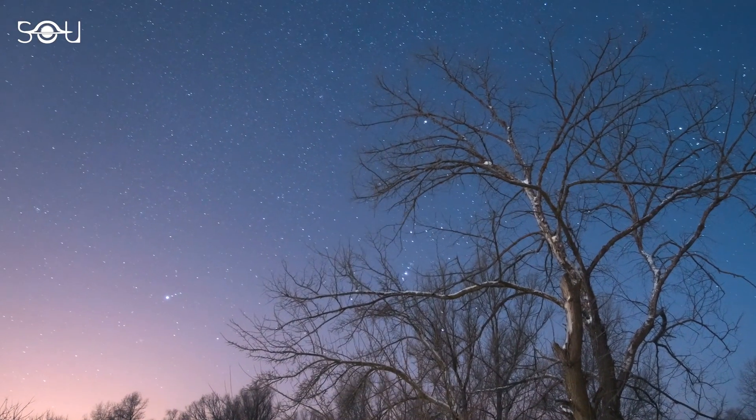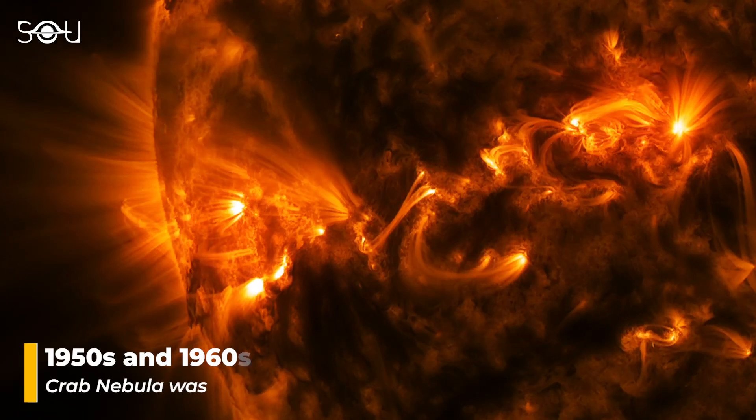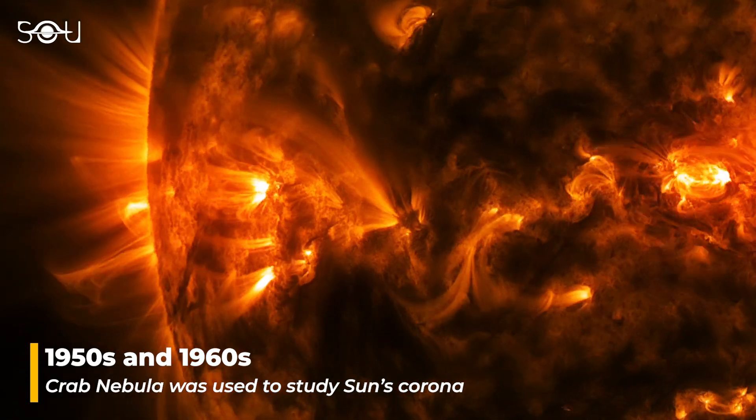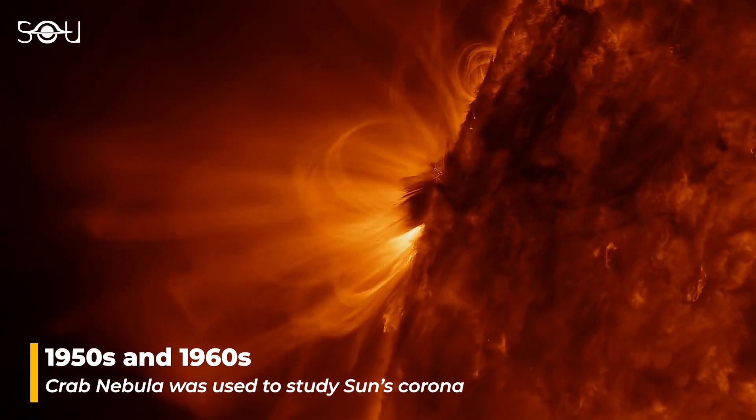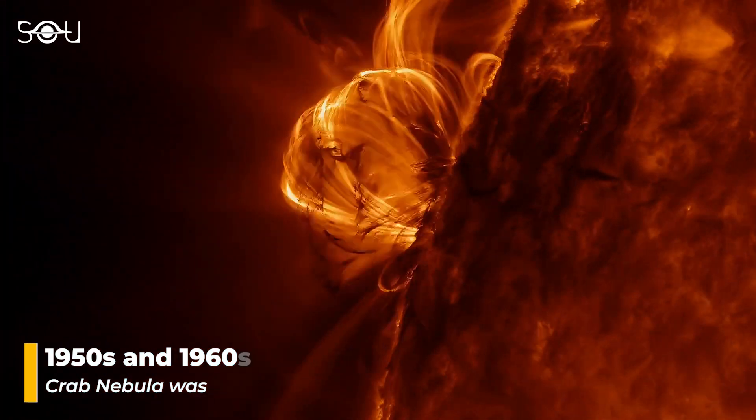For example, in the 1950s and 1960s, astronomers utilized the radio waves emitted from the Crab Nebula to map the Sun's outer layer. They observed how these radio waves were affected as they passed through the solar corona, thereby gaining valuable insights into the Sun's atmospheric properties.